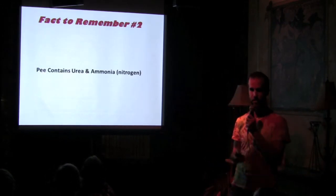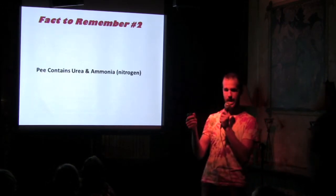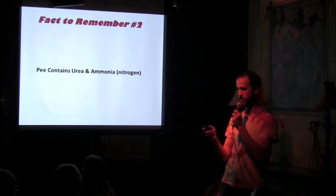So that brings us to fact number two. Pee contains both urea and ammonia which are both sources of nitrogen. So remember that for the end of the talk.